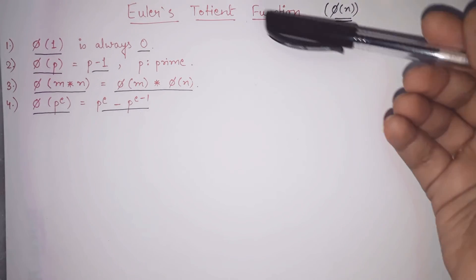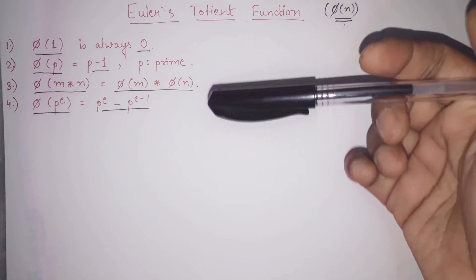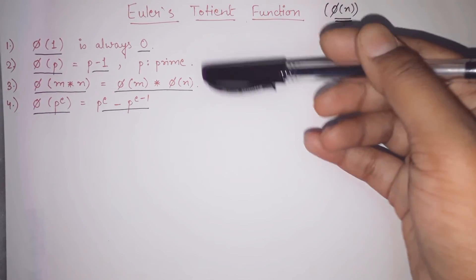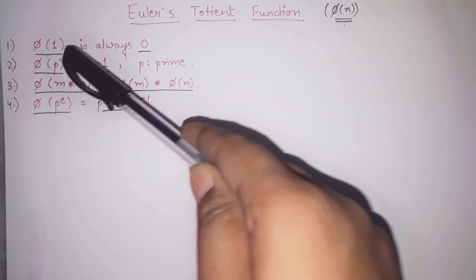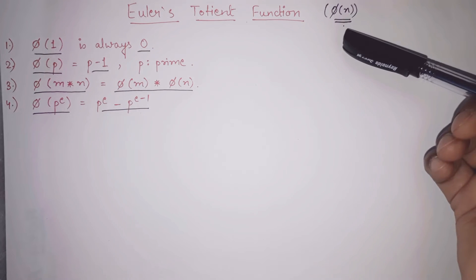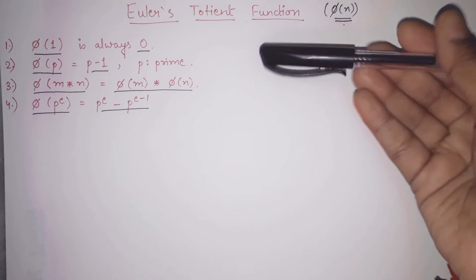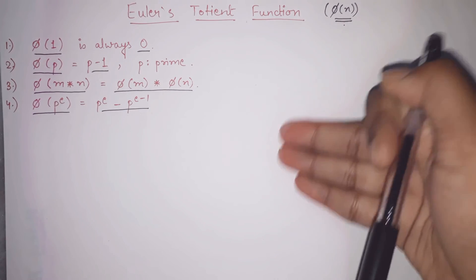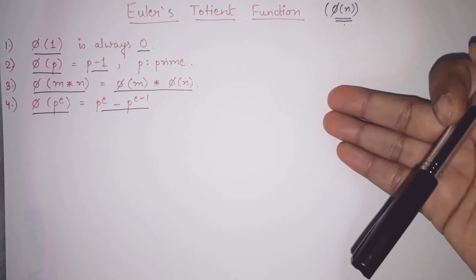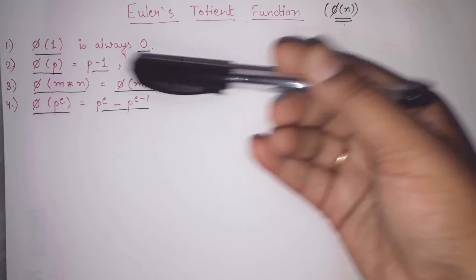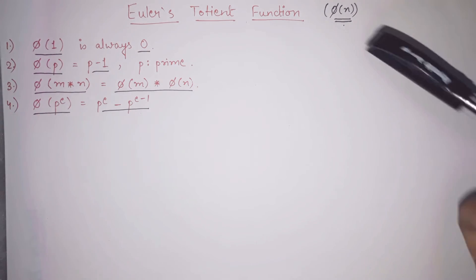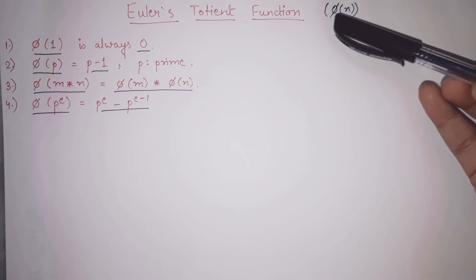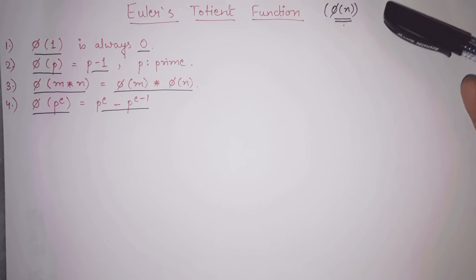To find out Euler's Totient function of any number n, we perform certain steps. First: phi of 1 is always equal to 0. Whenever you are asked to find phi of 1, you can directly write the answer as 0. Second: if you want to find phi of p and p is prime, you can write it as p minus 1. If the given number n is prime, you can directly write the answer as n minus 1.